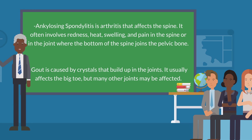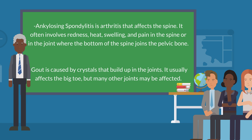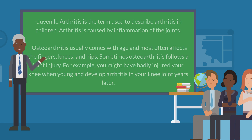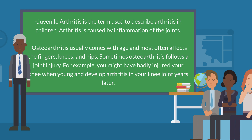Gout is caused by crystals that build up in the joints. It usually affects the big toe, but many other joints may be affected. Juvenile arthritis is the term used to describe arthritis in children. Arthritis is caused by inflammation of the joints.